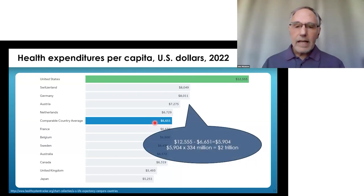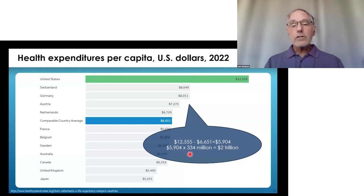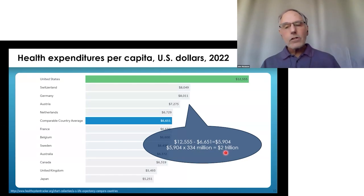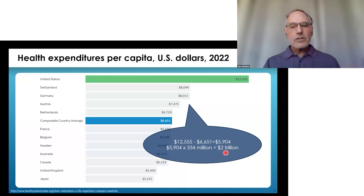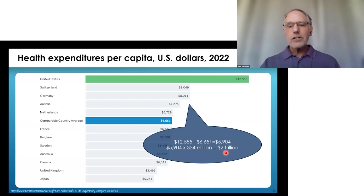If you subtract what the United States is spending from what other countries are spending, that's $5,900 per person per year. Multiply $5,900 times the population of the United States — 334 million people — and we are spending $2 trillion a year in excess of other countries, while 1.1 million Americans are dying in excess each year. It's craziness.